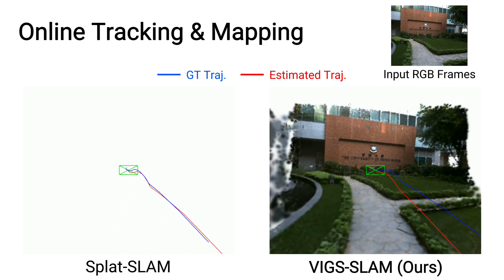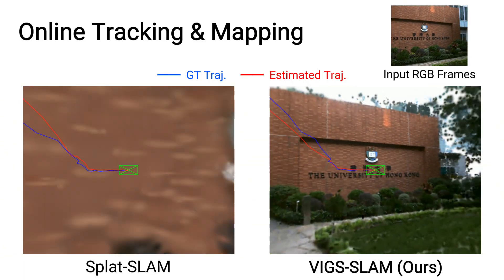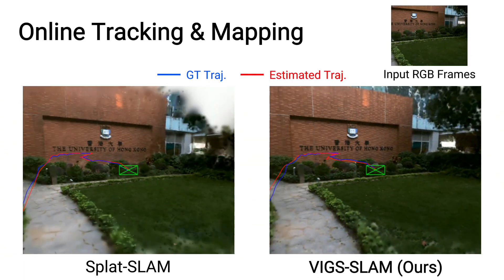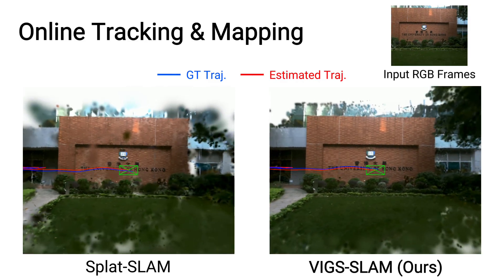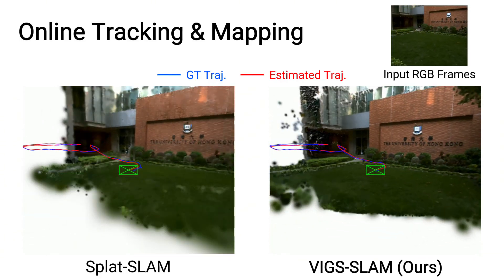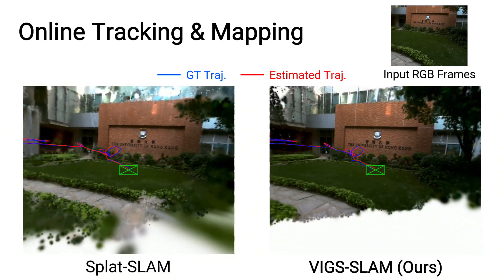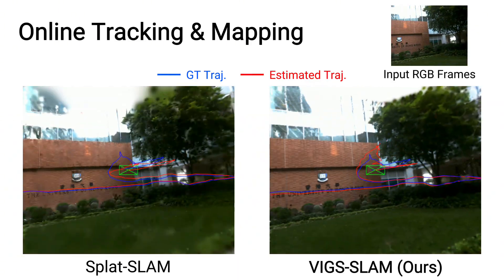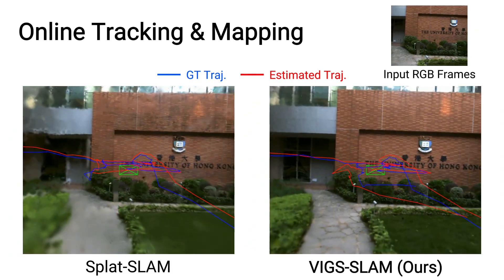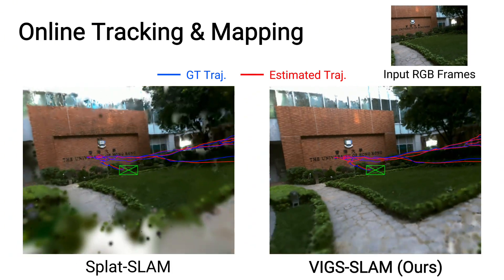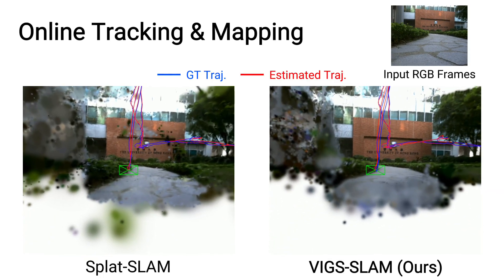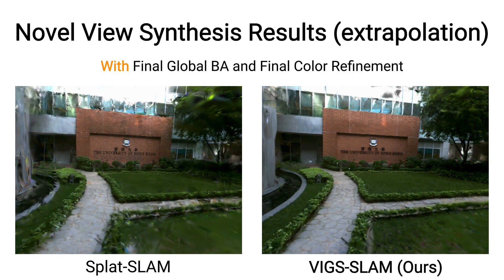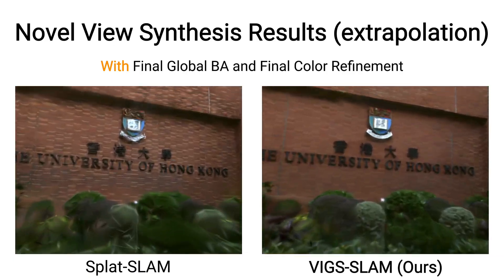We further evaluate on the fast level 2 HKU sequence. Compared to SplineSlam, our VIGS SLAM yields noticeably fewer artifacts and achieves faster convergence over the entire sequence. We additionally include extrapolated view synthesis results after the final global bundle adjustment and color refinement.